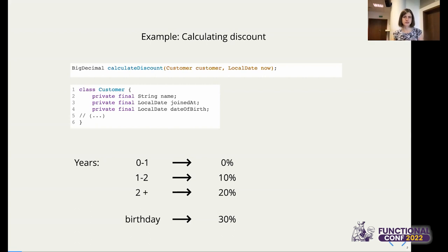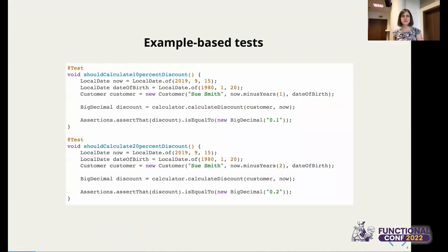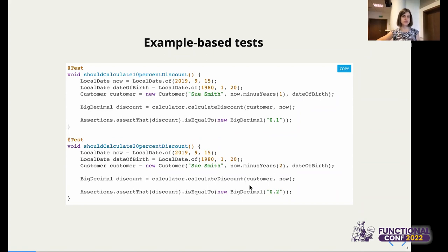We'll be working on BigDecimals, so 30% will be 0.3. Now, how would we test this in a traditional, example-based style? I would write a couple of test cases. The first: should calculate 10% discount — I prepare a Customer who joined one year ago, with some date of birth that is not today's birthday, invoke the business method, and assert the discount is 0.1. Similarly for 20% — a customer who joined two years ago, no birthday today, and I verify the discount is 0.2.